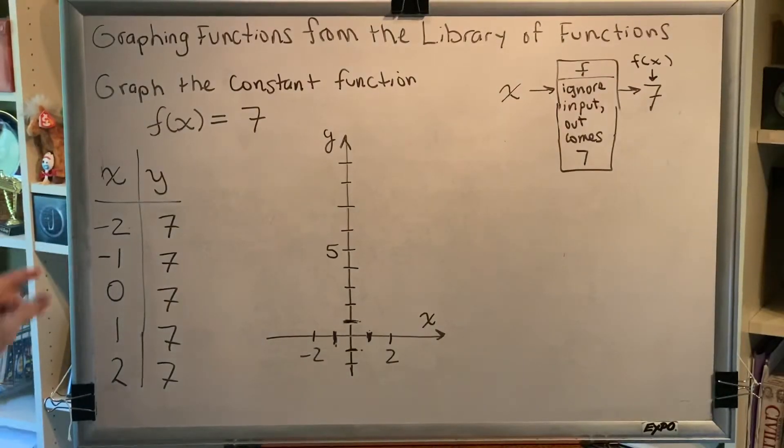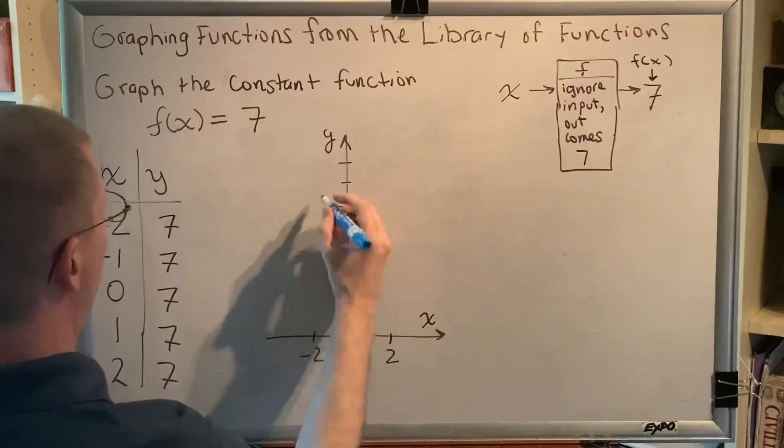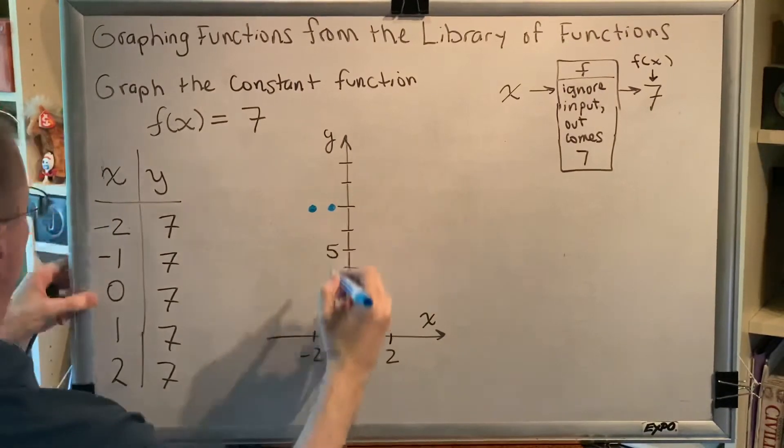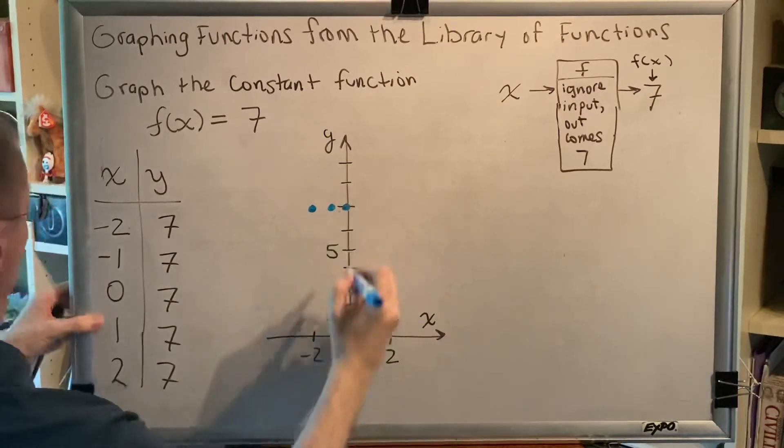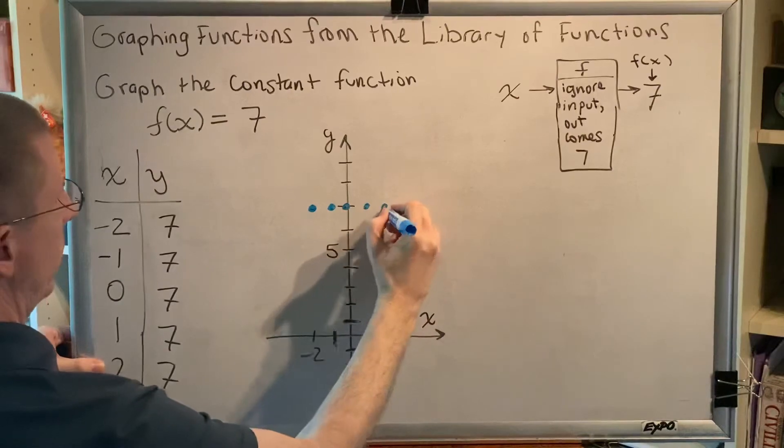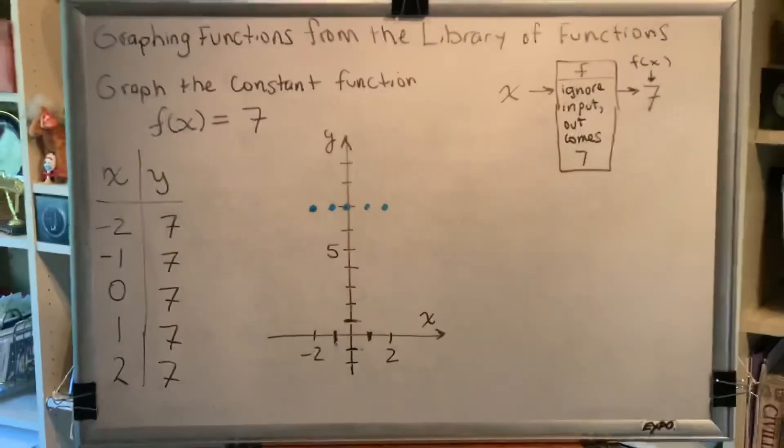And so we get points like (-2, 7), which would be here. (-1, 7), same height. (0, 7), same height. (1, 7), same height. (2, 7), same height. Clearly this is making a line.